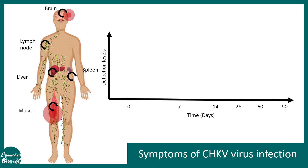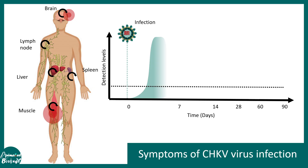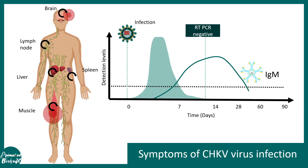Let us talk a little about immunology. There is a curve showing the detection levels of the virus over time in days, with day zero being the site of infection. The infection rises and the number of viral particles also rises in the body, but after seven days it starts declining and after 10 to 12 days it would not be detectable using RT-PCR tests. After infection there would be a rapid increase in IgM and eventually a slow increase in IgG antibodies against these viruses.